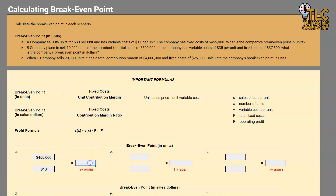So how many units do we have to sell? That's $455,000 divided by $13 unit contribution margin. We have to sell 35,000 units in order to break even.